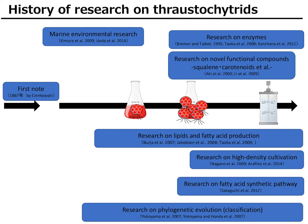Let me briefly introduce the history of research on thraustochytrids. The name was first cited in publications in 1867, more than 150 years ago. Initially researchers focused on ecological and environmental research in the marine environment. After discovering that thraustochytrids can produce large amounts of lipids including functional fatty acids like DHA, the research focus shifted from ecological to industrial utilization.